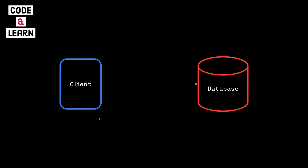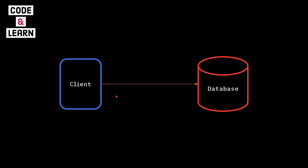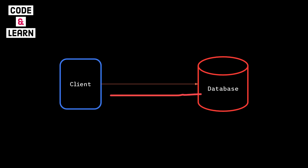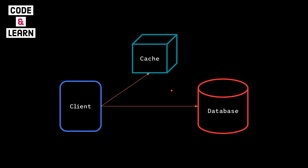Imagine your application needs to fetch the same piece of data — like user profile information — over and over again. It will be making round trips. Every single request means a trip to the database, which involves network latency, then disk IO, and processing time. It's like recompiling a complex piece of code every single time you want to run it — you have to go through network latency and database latency each time you want to fetch data. This is the reason we have cache.